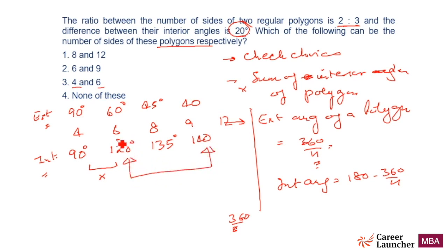So it is 6 and 9. So two things: check choices and second this is a much more convenient formula to find the interior angle.